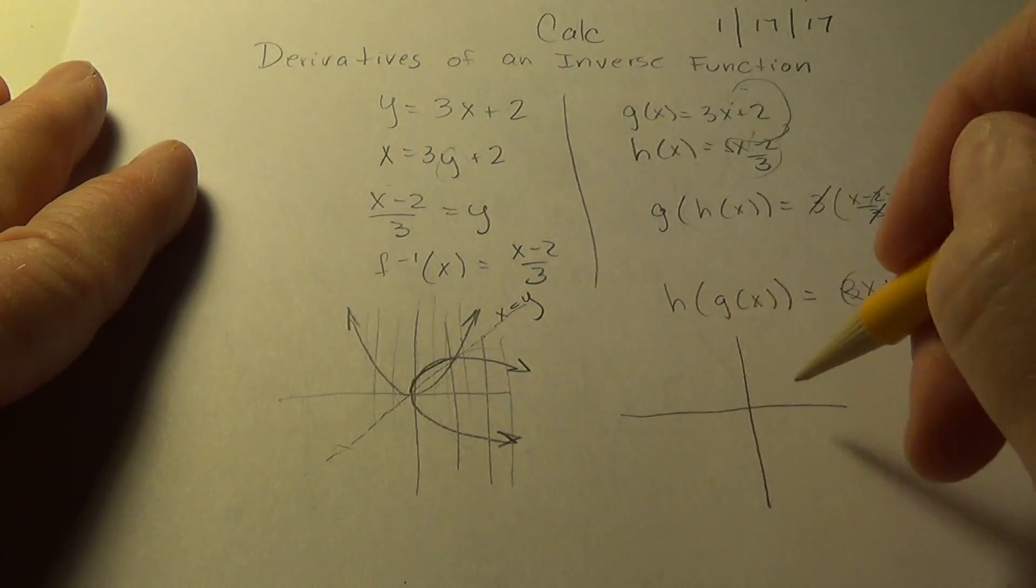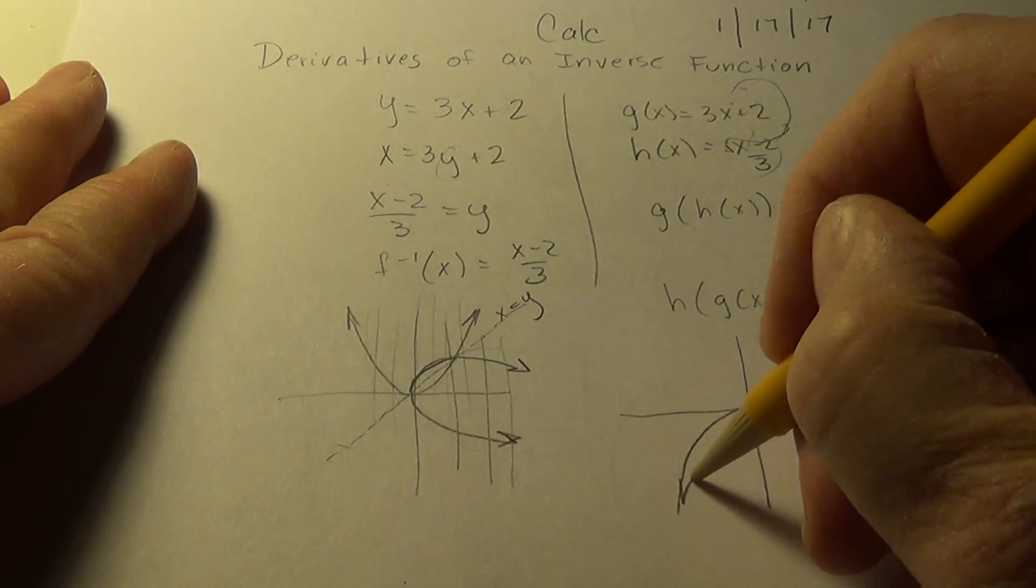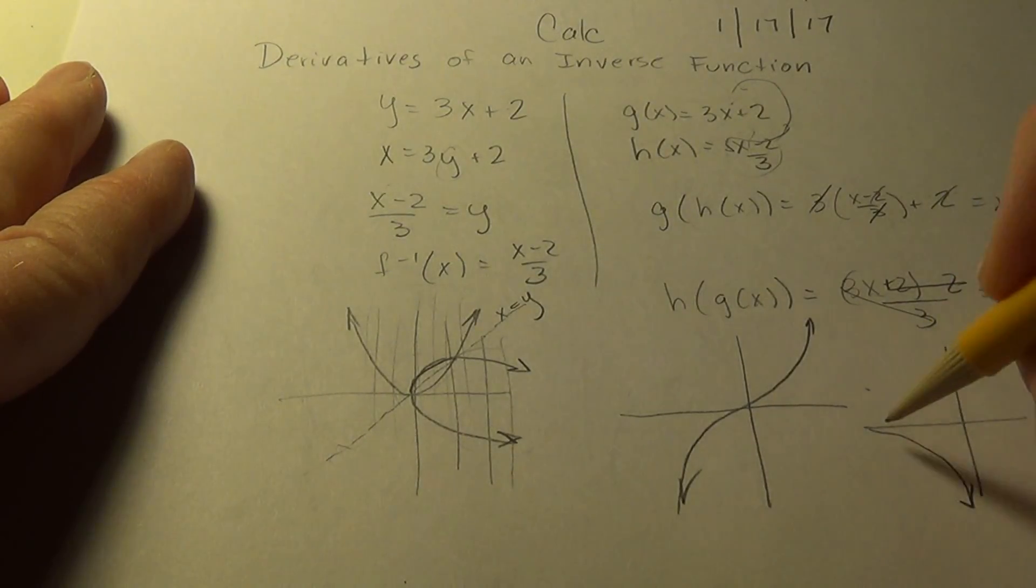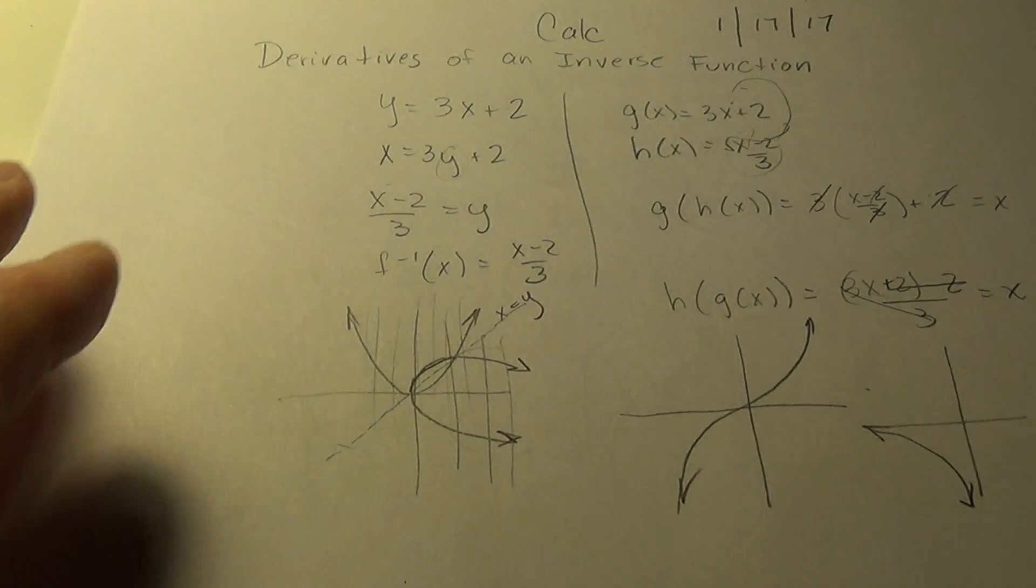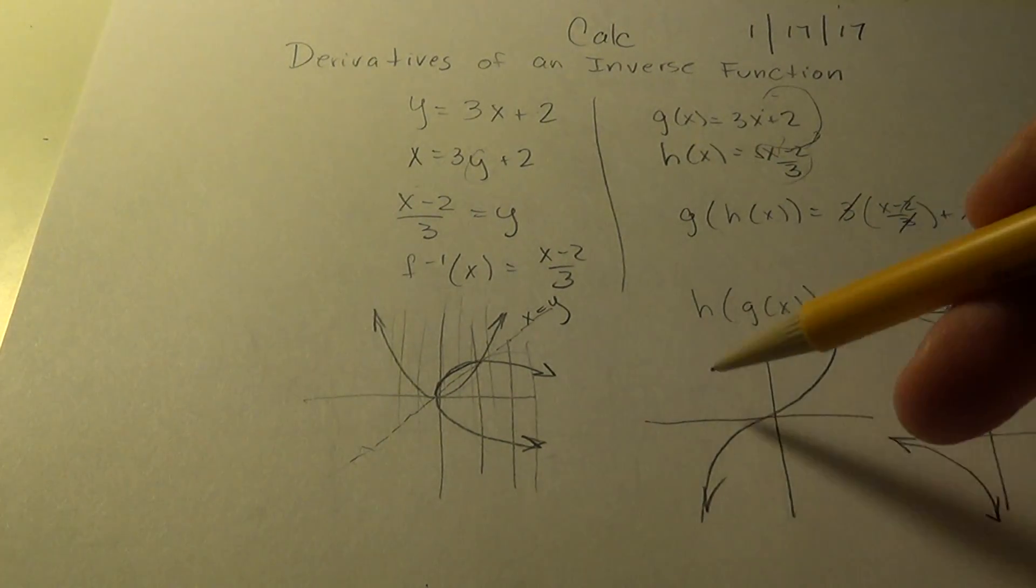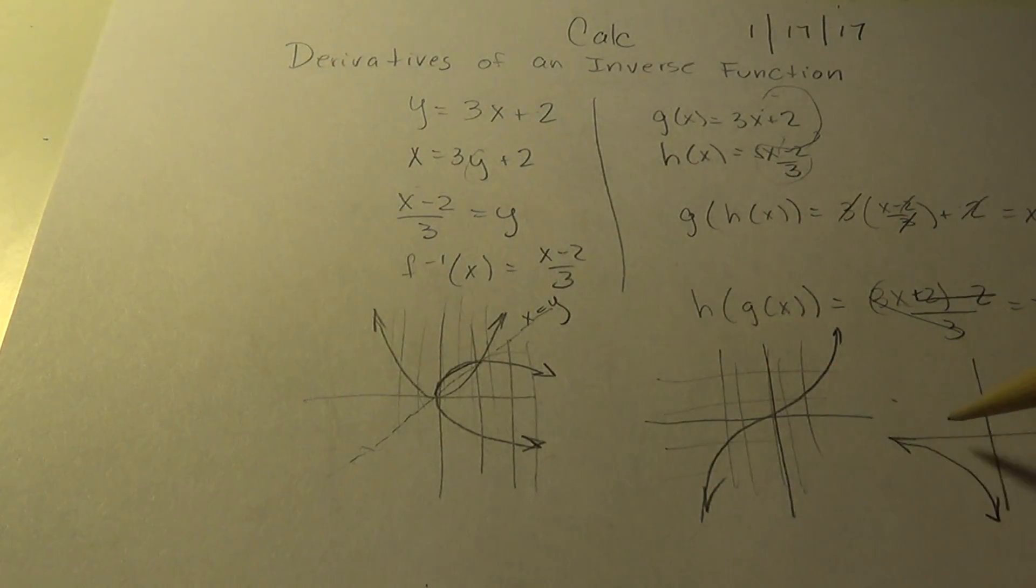So, what would the original function have to look like so that when we did look at its inverse, it was also a function? Well, it would have to be either always increasing or always decreasing.